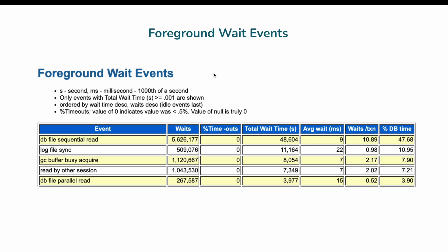The next section to review is the foreground wait events. Here you can clearly see DB file sequential read is again at the top, consuming 47% of time with an average wait of 9 milliseconds. The second event is log file sync, consuming 10% of database time with an average wait of 22 milliseconds — this is certainly a very high number and we will explore why this happens in the forthcoming slides.